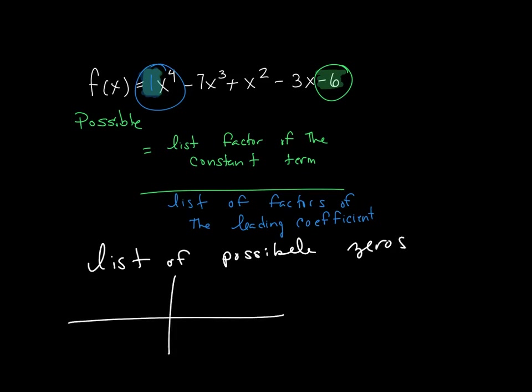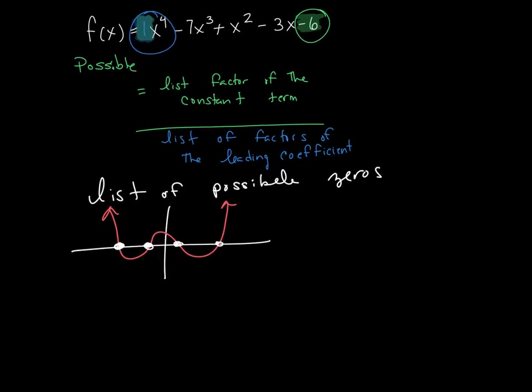What we're trying to do is we are trying to make a list of possible zeros. And what that 0 means is where could it be possible that this graph touches the x-axis? Now, because the degree of this polynomial is 4, this graph could touch the x-axis at most 4 places. So we are making a list of all of the possible places that can happen at.